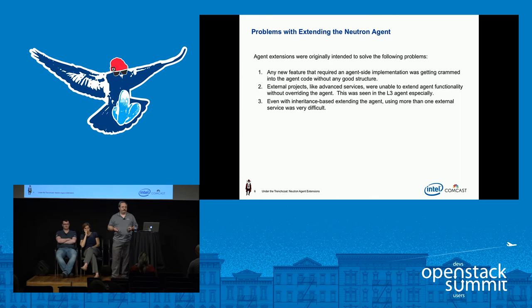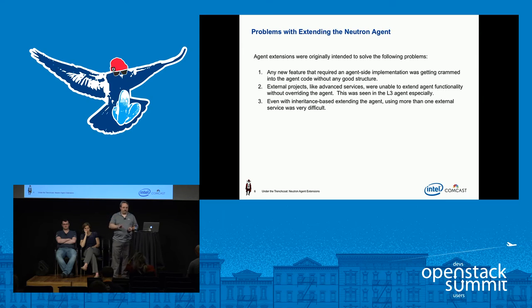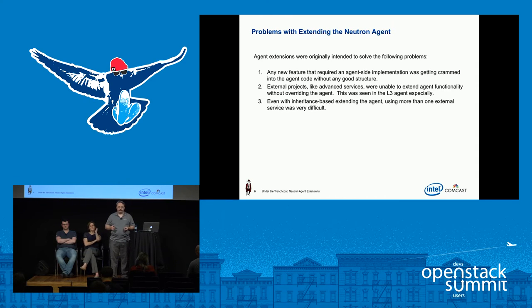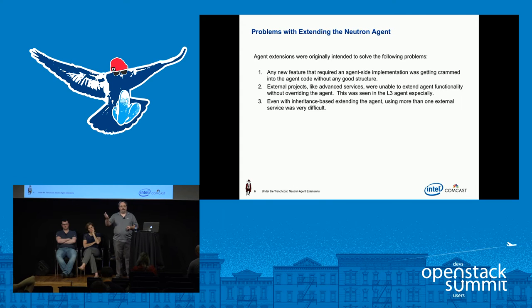The problems that agent extensions were intended to solve: whenever a new feature needed to be implemented in neutron that required some agent-side implementation code, that code was just getting put into the neutron agent in general, which led to some bloat in the agent. That was not a sustainable path over the long term. Also, advanced services or external projects were unable to extend agent functionality without overriding the agent — taking the main agent class, subclassing it with additional service-specific logic.